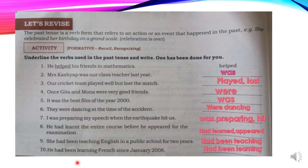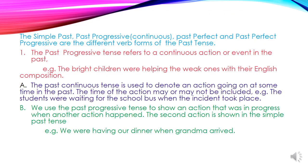Number ten: he had been learning French since January 2008. Here had been learning shows the verb. Now let us learn more about the past progressive tense. The past progressive tense refers to a continuous action or event in the past. Example: the bright children were helping the weak ones with their English composition.